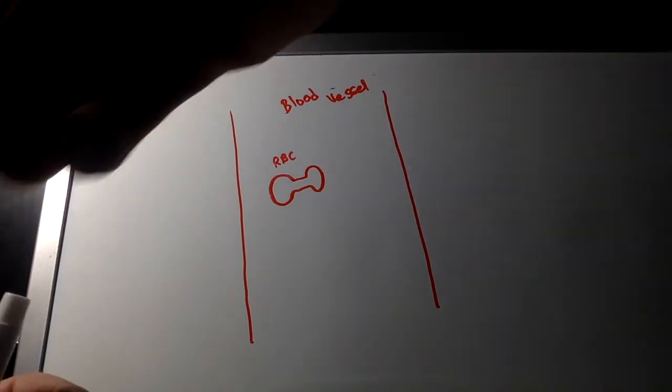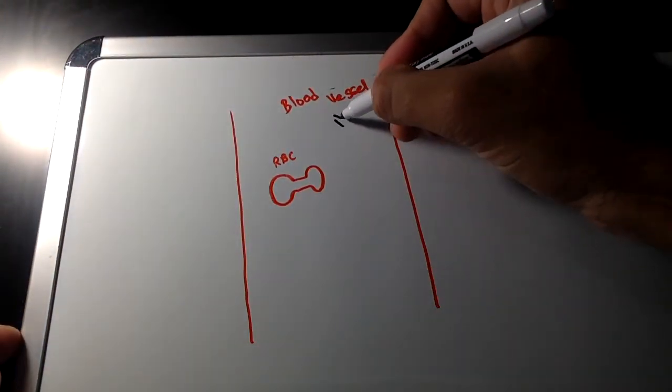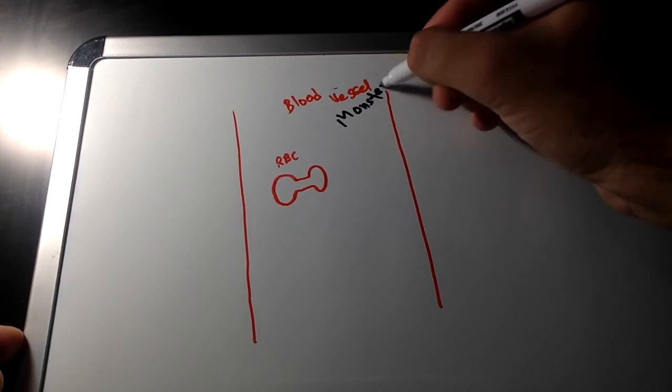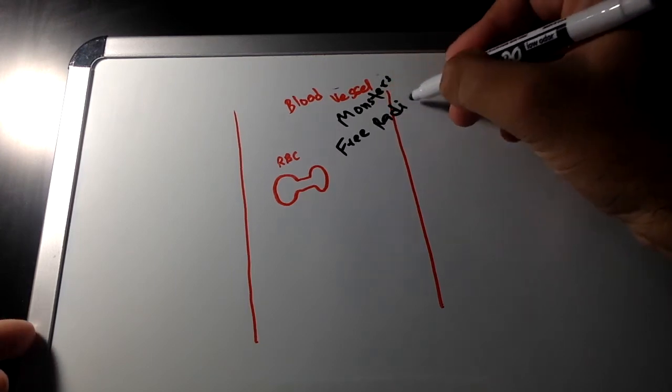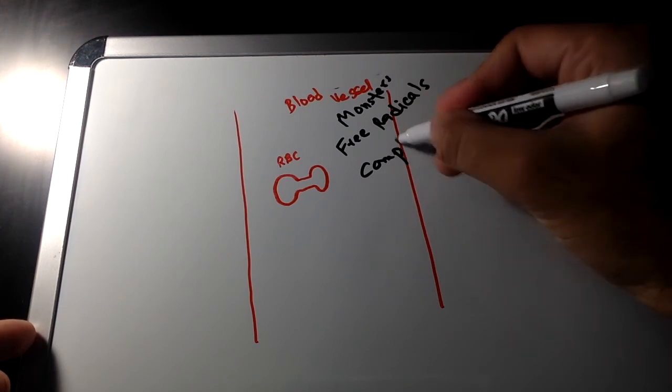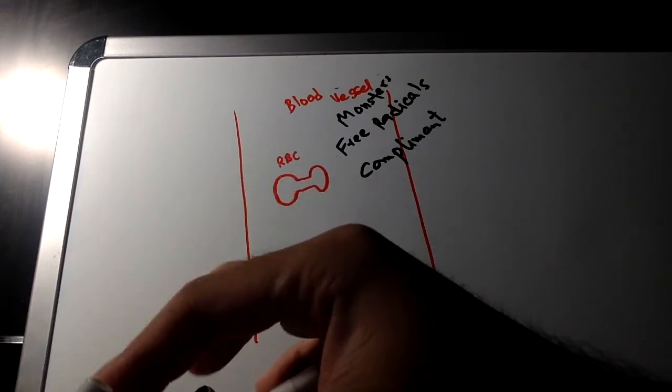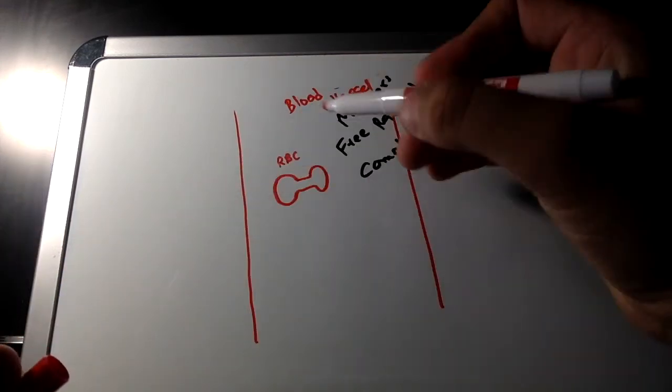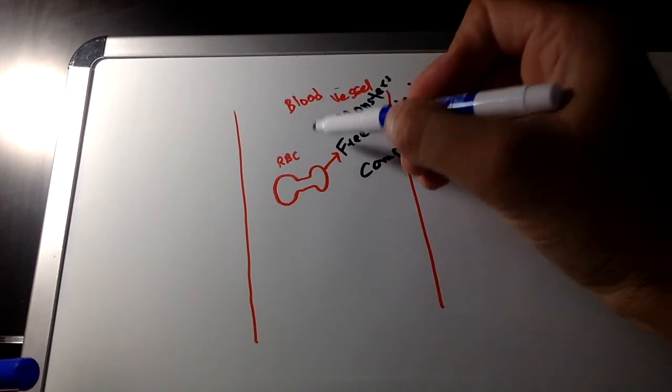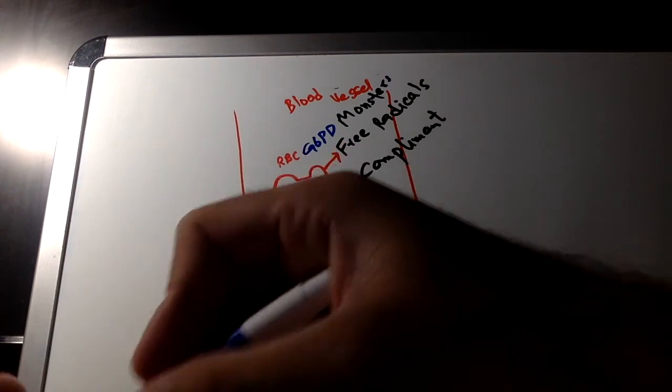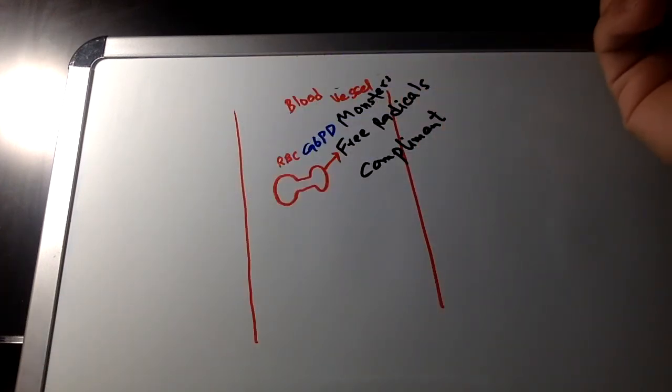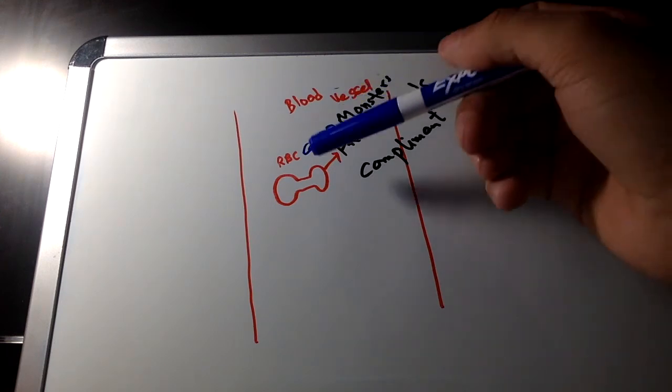Obviously needs to protect them, red blood cells. There are big monsters in there. They are free radicals and complements. They can eat up RBC, they can damage RBC. To protect red blood cells from free radicals, RBC has G6PD. If RBC is deficient in this enzyme, the problem we get is called G6PD deficiency.